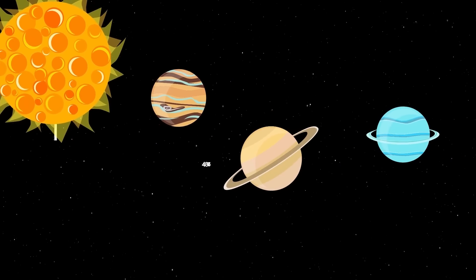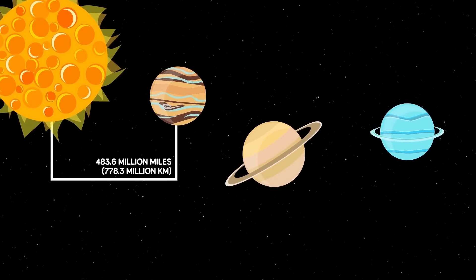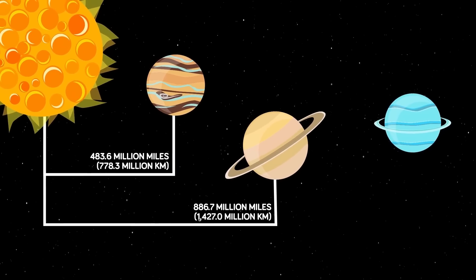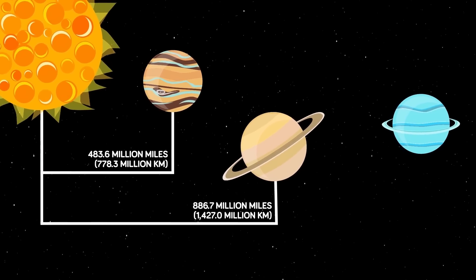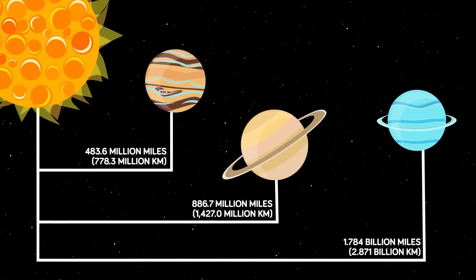Jupiter is the next planet on the list at 483.6 million miles from the sun, and after that comes Saturn at 886.7 million miles. Then we have the planet that is literally the butt of planet jokes, Uranus. Poor, picked on Uranus, is 1.784 billion miles away from the sun. So a billion miles away from the sun is somewhere between Saturn and Uranus.